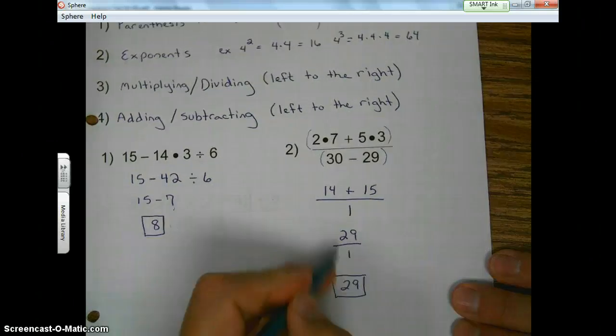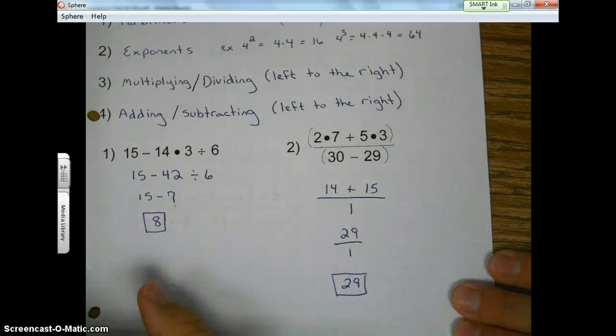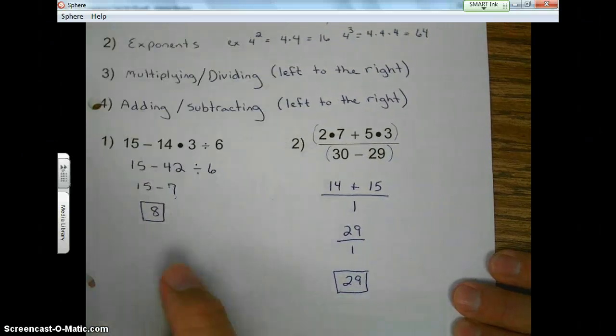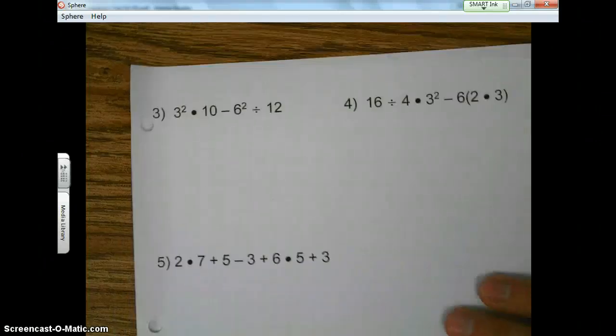29 divided by 1 is 29. Remember, anything divided by 1 is itself. Anything times 1 is itself as well. All right, turn the page.